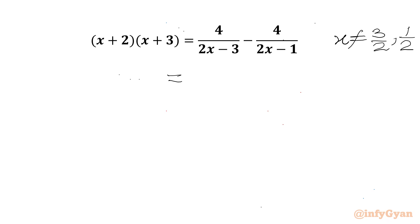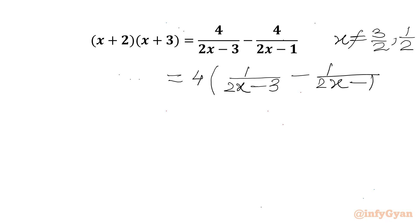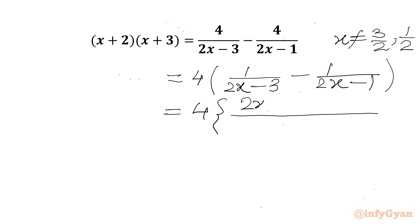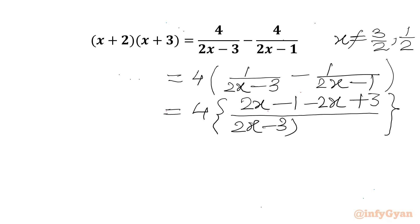Now we will take 4 common from the RHS. So in the bracket we can write 1/(2x-3) - 1/(2x-1). Now we can take LCM. In the bracket we will write (2x-1) - (2x-3) in the numerator, and (2x-3)(2x-1) in the denominator.